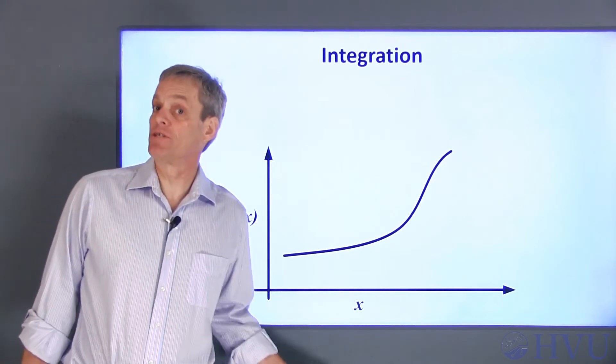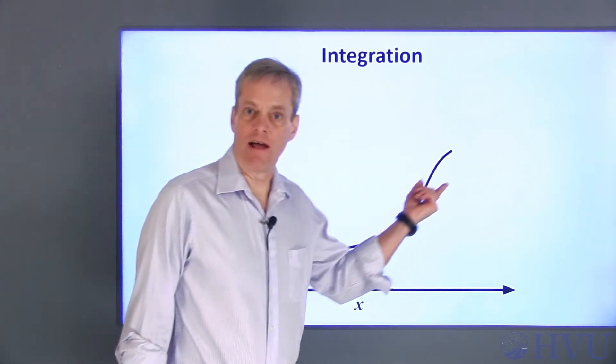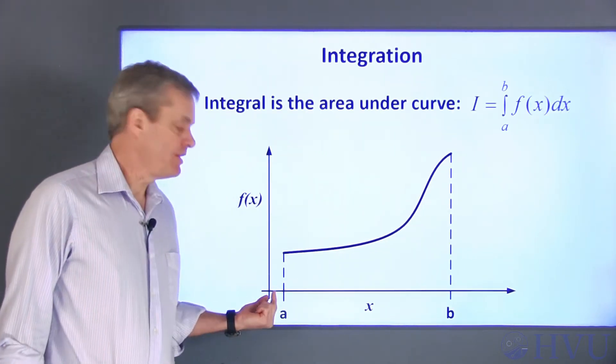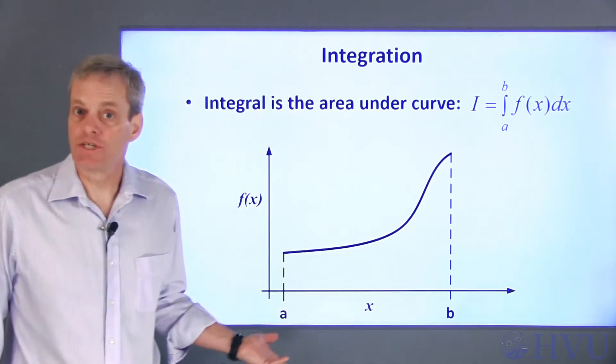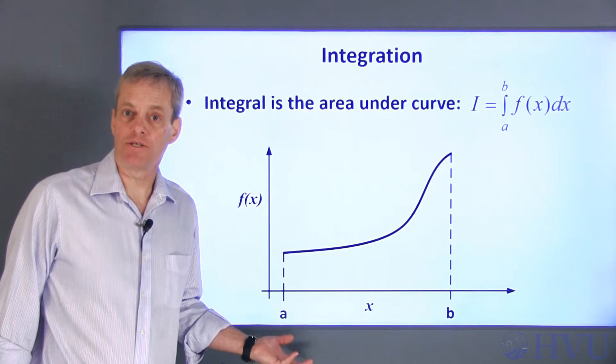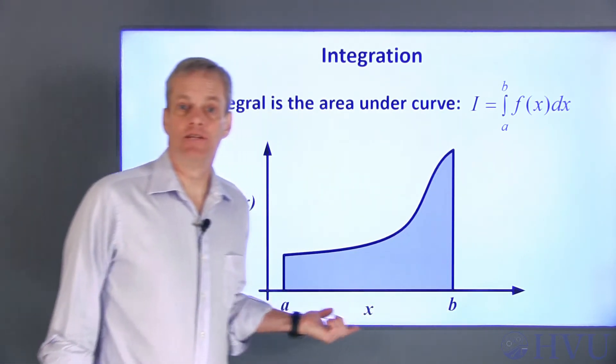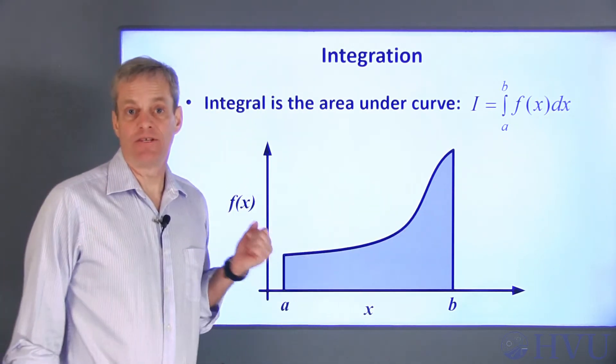First, I'll quickly review integrals and their notation. Suppose we have a function that's represented graphically by this curve. We want to integrate the function between the values of a and b. The integral of a function gives the area under the curve representing the function. The integral of this function between a and b can be determined by calculating the area under the curve, as indicated by this gray area.